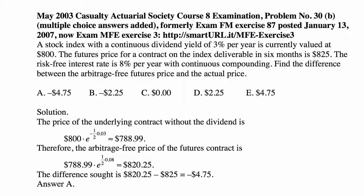But the price in the market is apparently $825. The price for this futures contract in the market is too high, and the difference between the arbitrage-free price and the market price is $800.25 minus $825, or negative $4.75.